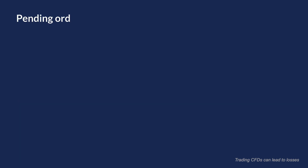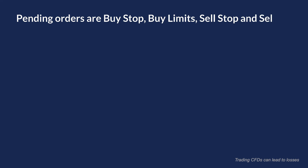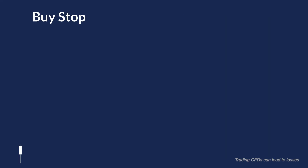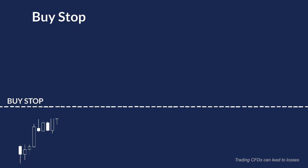Pending orders include Buy Stop, Buy Limit, Sell Stop, and Sell Limit. A Buy Stop is the price level set by the trader when they wish to buy their asset in the future. The predefined price for the Buy Stop is always higher than the current market price of the asset.